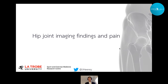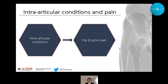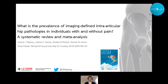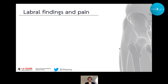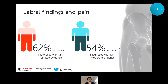I want to provide an overview of the relationship between hip joint imaging findings commonly seen in FAI syndrome and acetabular dysplasia and their relationship with symptoms. Along with my research team, we undertook a systematic review published in the British Journal of Sports Medicine in 2018 to understand the prevalence of imaging-defined conditions in people with and without pain. For labral findings, we found a pooled prevalence of 62% in those reporting hip and groin pain, but an equally high prevalence in asymptomatic individuals.